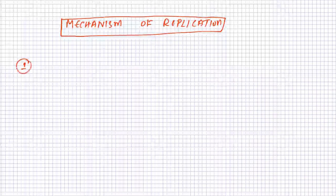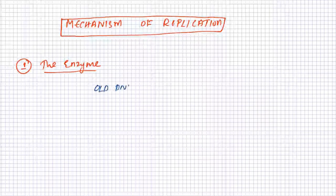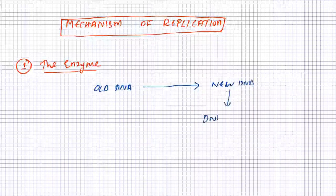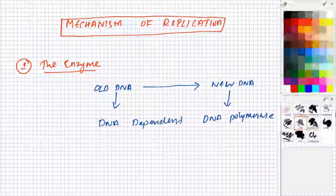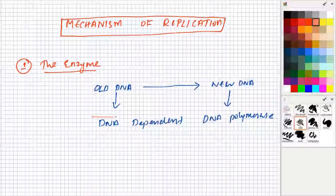The first thing we have to discuss is the enzyme for replication. Everybody knows that it is creating a new DNA from an old DNA. Since a new DNA is formed, the enzyme is known as DNA polymerase. Since it is depending upon the old DNA, we will be calling it DNA dependent. So the total name for the enzyme will be DNA dependent DNA polymerase.